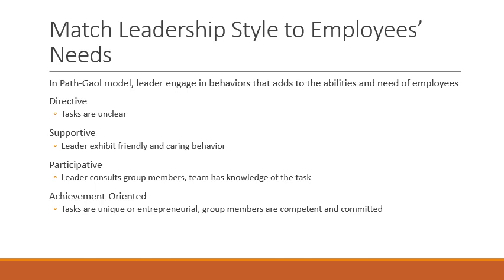The model suggests that effective leaders should exhibit behaviors that add to the team's abilities and task nature. These behaviors must look for the needs and satisfaction of group members and compensate for any deficiencies. The model recognizes four behavior types: directive behavior, supportive leadership behavior, participative leadership, and achievement-oriented leadership.